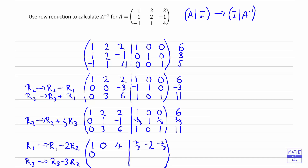Row 2 stays the same: 0, 1, negative 1, negative 2 thirds, 1, and a third. And then row 3, taking away 3 times row 2: 0 take away 0 stays as 0. And then 3 take away 3 will be 0 — so you can now see that we have column 2 looking good, and column 1 is still staying as it should be. For the last element of row 3: 6 take away 3 times negative 1, so that's 6 plus 3 equals 9. Then 1 take away 3 times negative 2 thirds, so that's going to be 3. Then 0 take away 3 times 1, so negative 3. And the last element: 1 take away 3 times a third, will be 0.